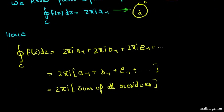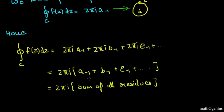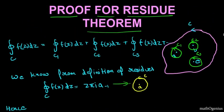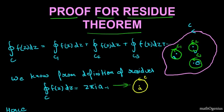And now we will take the 2πi common, and we remain with the sum of residue, 2πi times the sum of all residues. So we have proved the residue theorem. So this is a very simple proof for residue theorem. So thanks for watching this video, and always remember that math is everything.